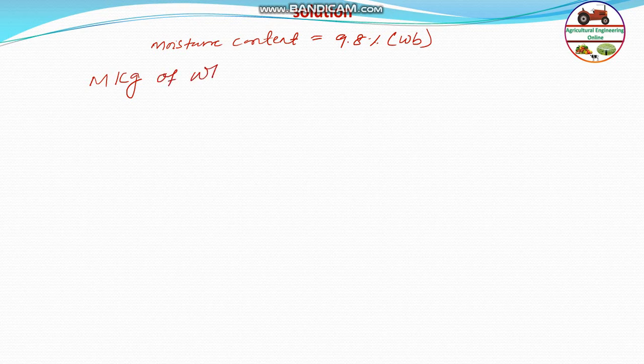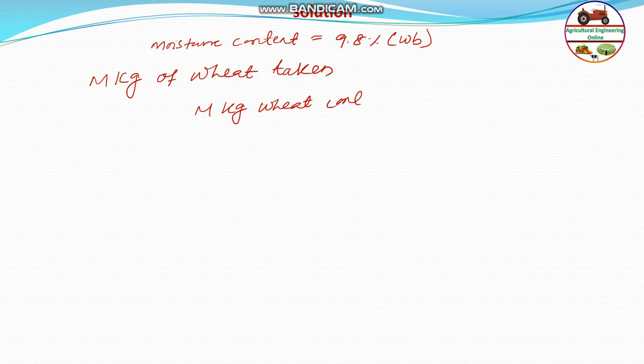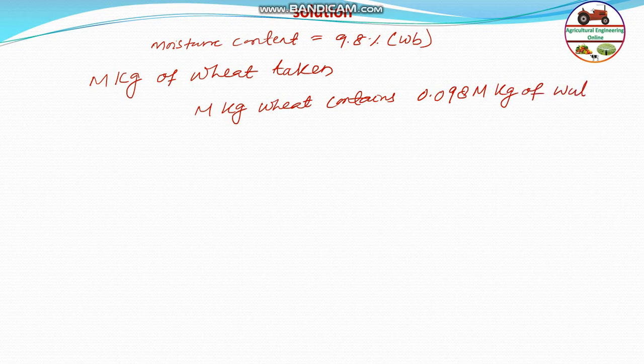The initial moisture content is given as 9.8% on a weight basis. So m kg of wheat contains 0.098 times m, that is kg of water. It is very simple because it is on a weight basis.